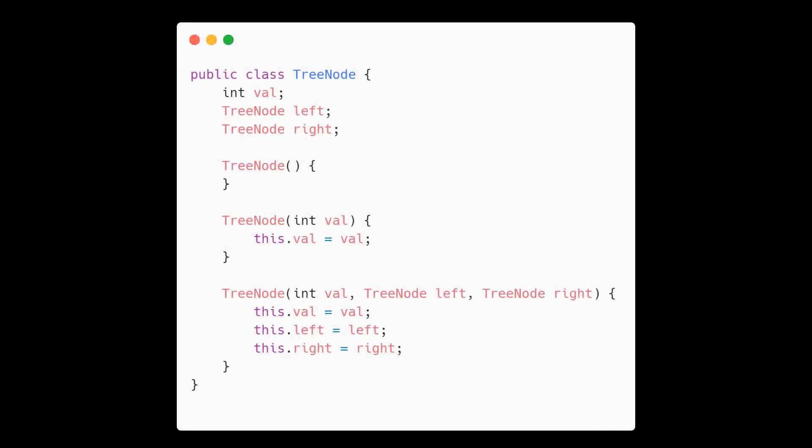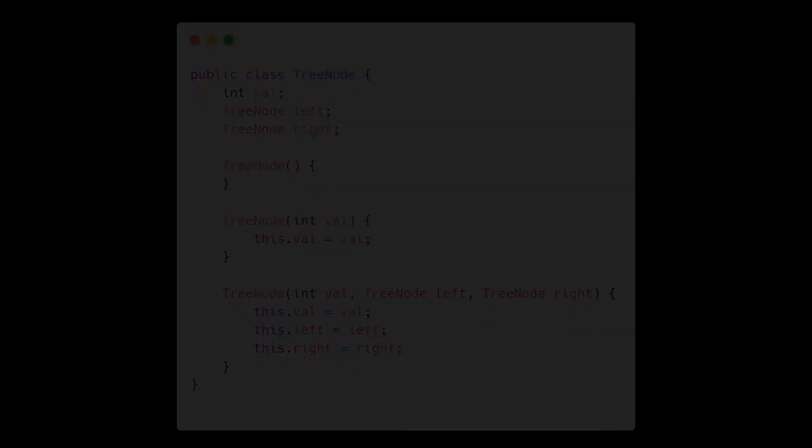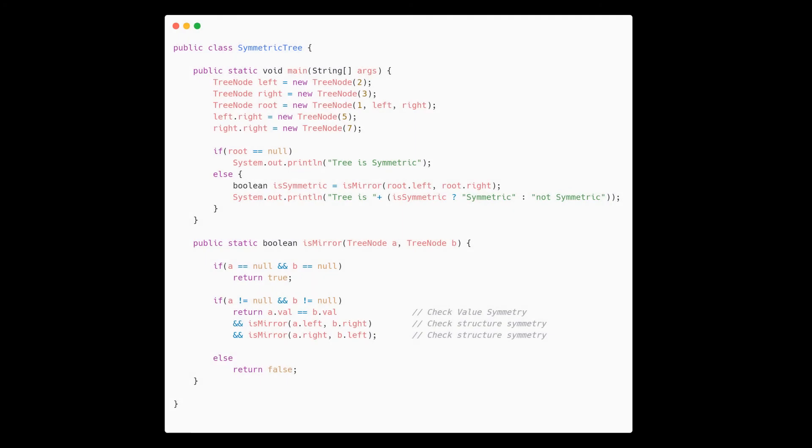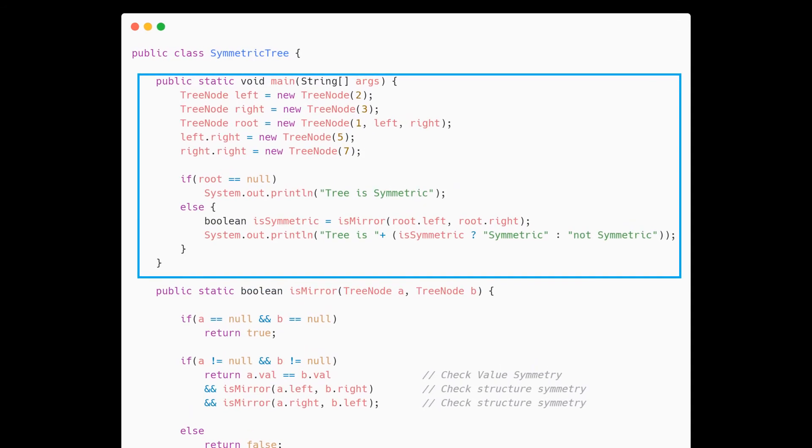Here's a tree node class with value right and left subtree references. In the main class, we have two methods, main method and is mirror method. The main method creates the tree using the constructor. It also checks the edge case if the root is null. This means that the tree is empty and thus it will be symmetric. If this is the case, we do not need to check further. Otherwise, we call the is mirror method on left and right of the root.